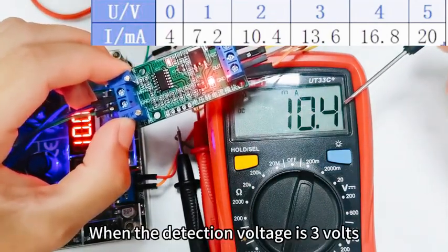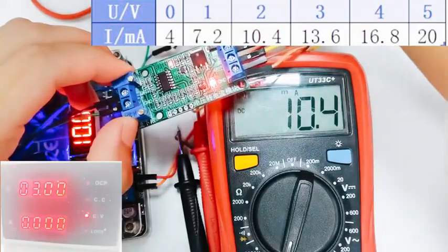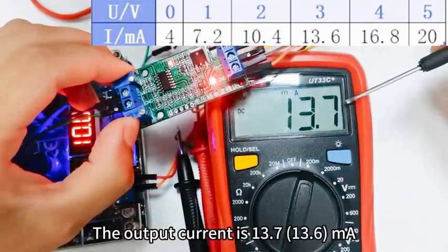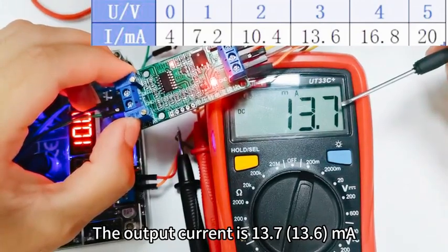When the detection voltage is 3 volts, the output current is 13.6mA.